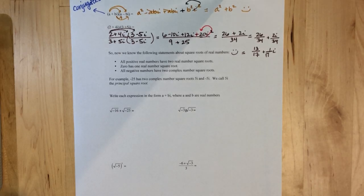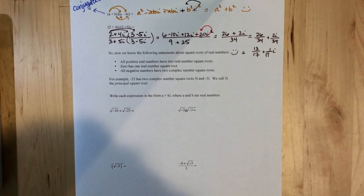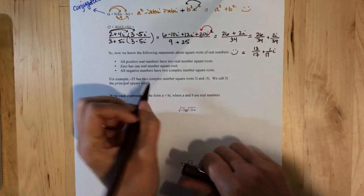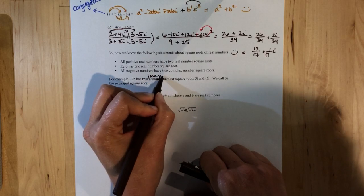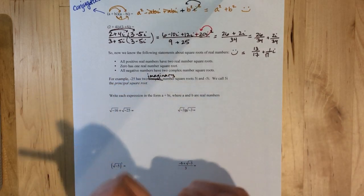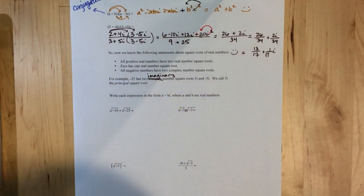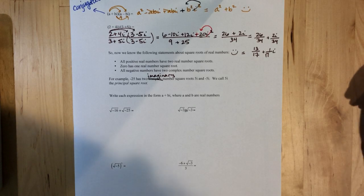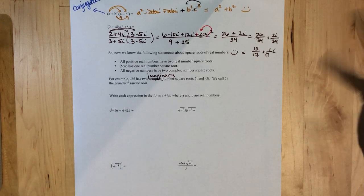So for example, negative 25 has two complex number square roots, or two imaginary square roots, 5i and negative 5i. We call 5i the principal square root, but we're really not going to use that definition in this class. It's just kind of a tidbit, like a fun fact.